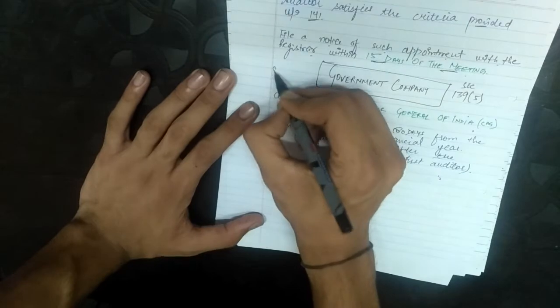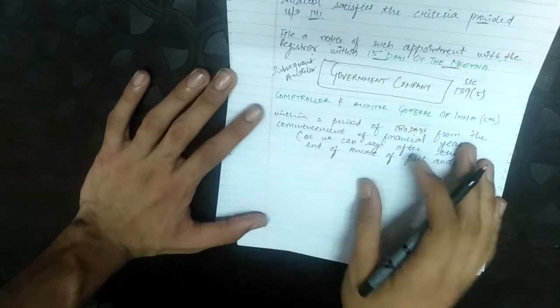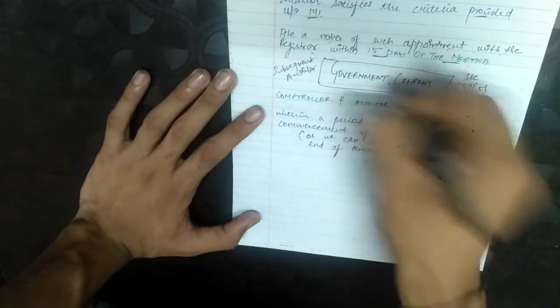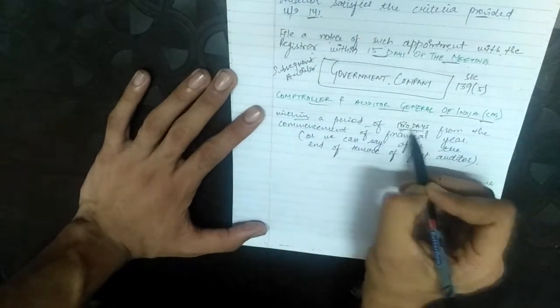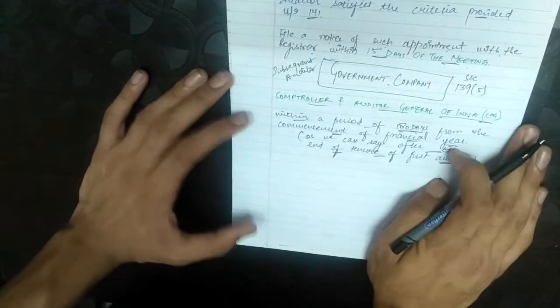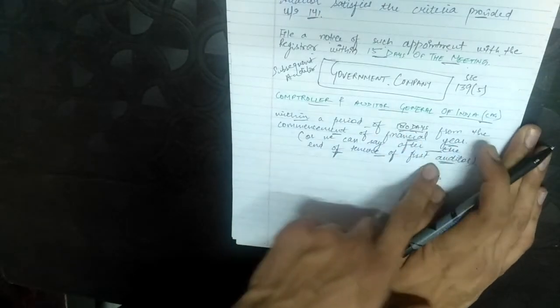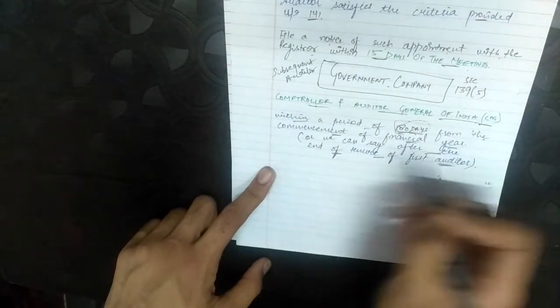For subsequent auditor in the case of a government company — Section 139 subsection 5 — the Comptroller and Auditor General of India appoints the auditor within a period of 180 days from the commencement of the financial year, or after the end of the tenure of the first auditor.